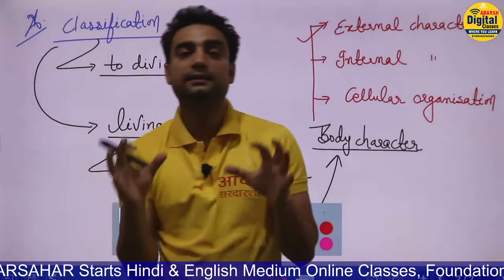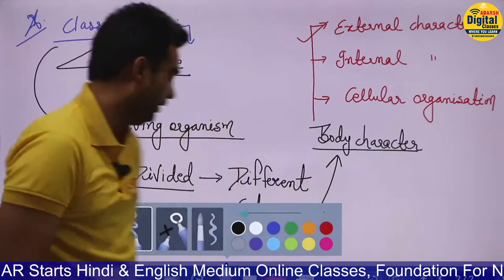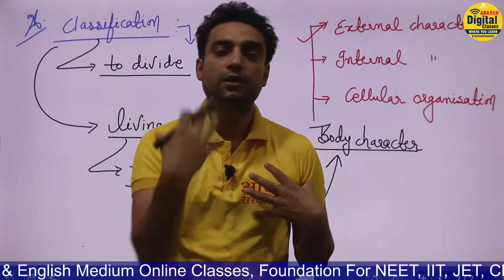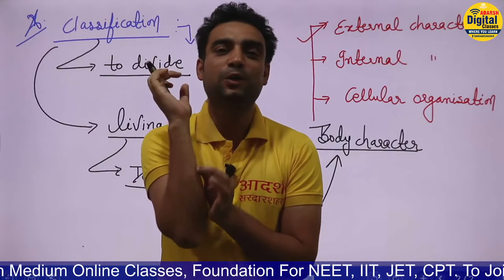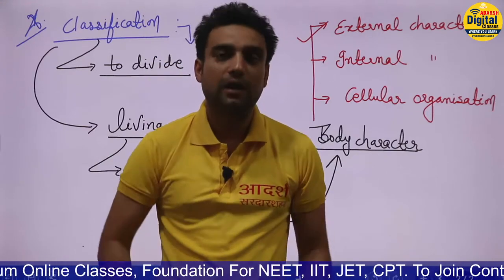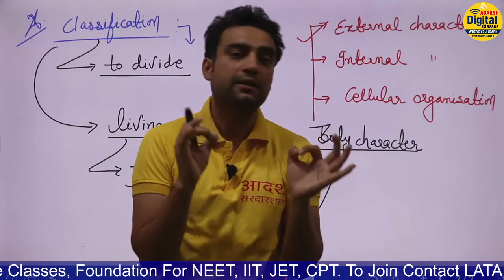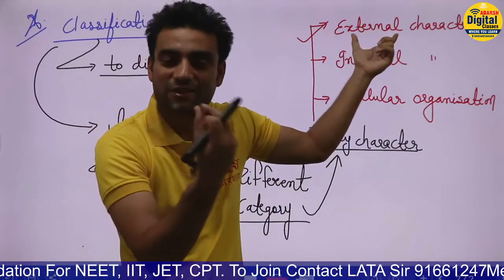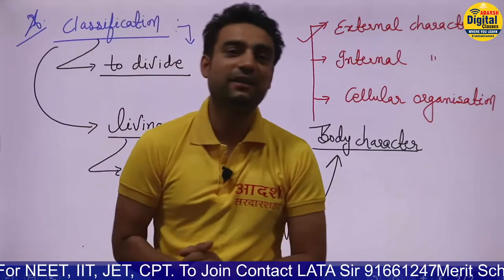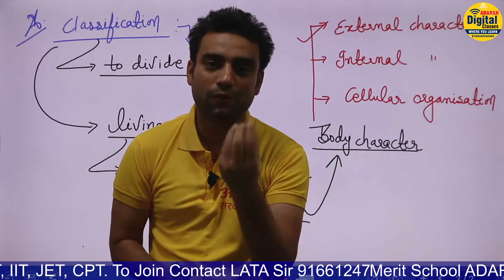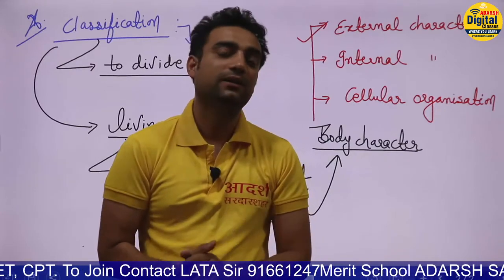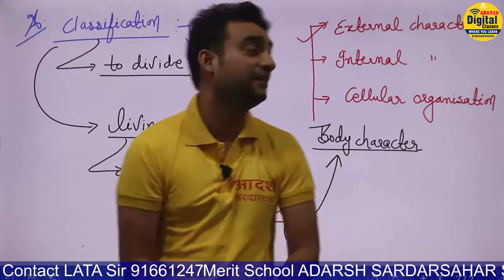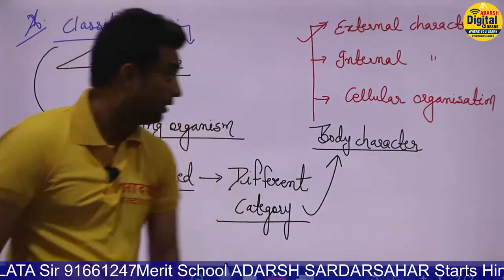External character means those characters situated outside the body — characters that are easily visible from outside. For example: color of skin, color of eyes, height, color of hair. In plants: the height of the stem, color of flower, color of fruit, color and length of leaf. These characters visible from outside are known as external characters.